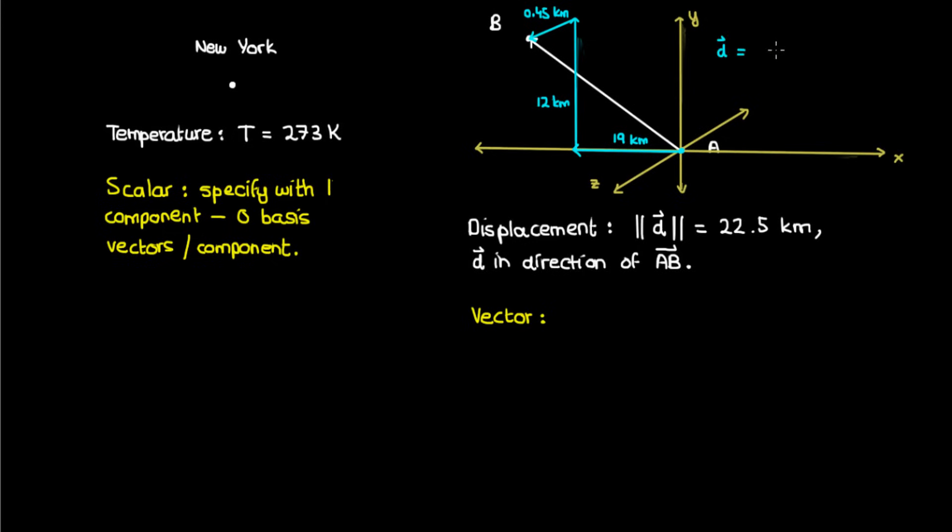As a result, one way I could write the displacement D is by writing it as negative 19i plus 12j plus 0.45k, if I use the ijk unit vectors in the x, y, and z directions respectively. Each of these three vectors that are added to give you the total displacement are called the component vectors of this displacement. This means that the vector which describes my displacement from A to B has three components and one basis vector for each component. I've got the basis vector i for the 19 kilometer west component, the basis vector j for the 12 kilometer north component, and the basis vector k for the 0.45 kilometer up component. I've got one basis vector corresponding to each component.